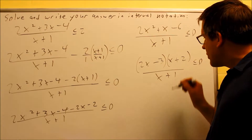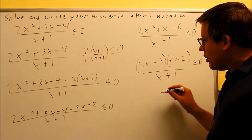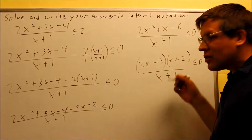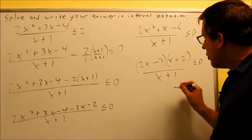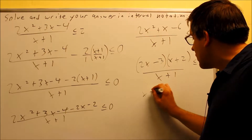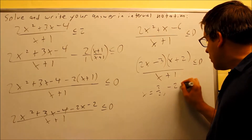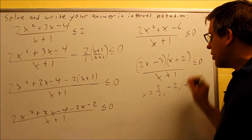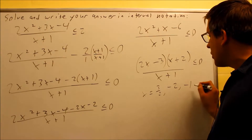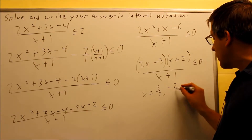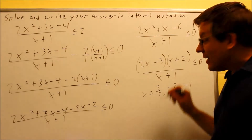Now that it's in factored form, we need to see which values make the top and bottom equal to zero. For this one, we're going to get x equals 3 halves, negative 2, and negative 1. It's whatever makes the top or bottom equal to zero. So here are all three of those numbers — 3 halves, negative 2, and negative 1 will make either the top or bottom zero.